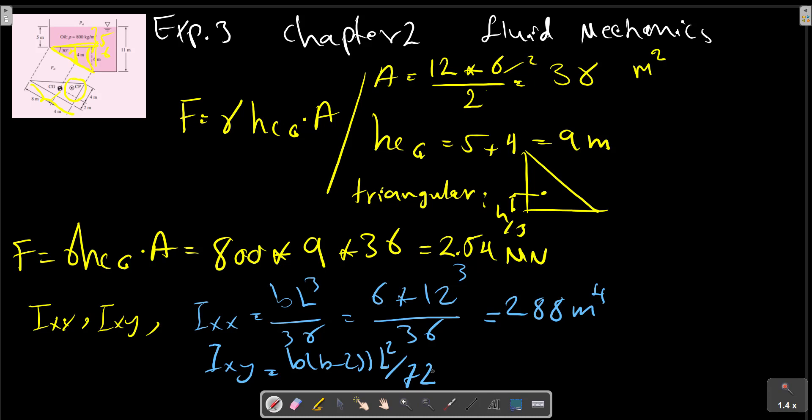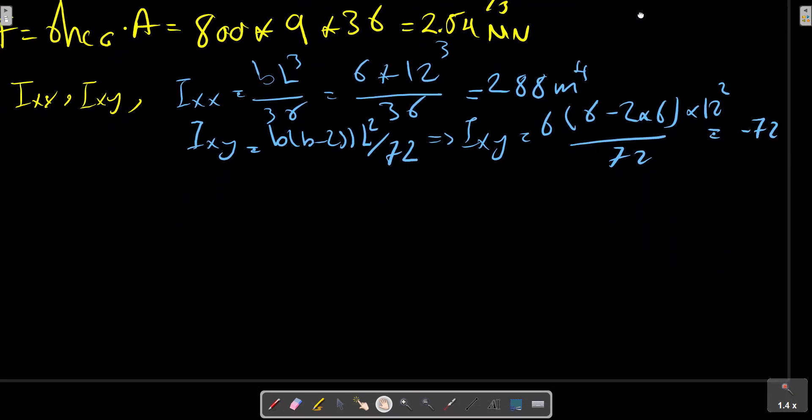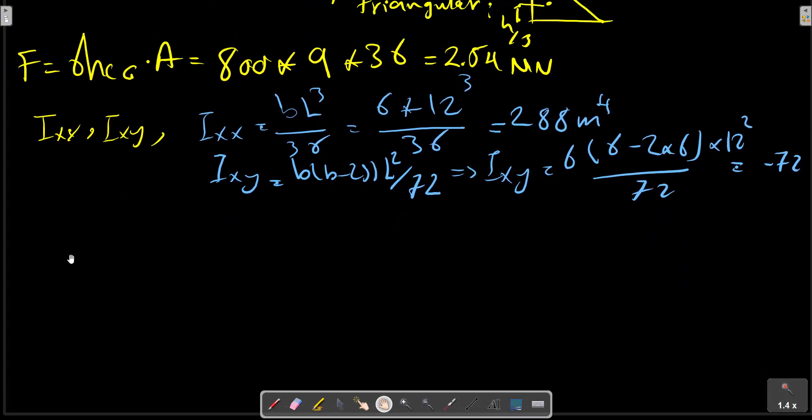So you can calculate as 6 times (6 minus 2 times 6) times L squared. L is 12 over 72, equals to... So with this calculation we now can calculate YCP from the previous formula.